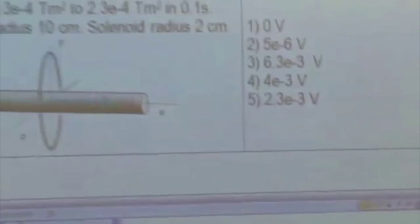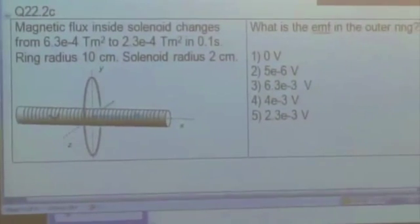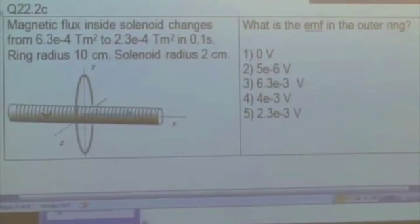We're going to change the current so that the magnetic field in the interior changes from 6.3 times 10 to the minus 4 tesla meters squared to 2.3 times 10 to the minus 4 tesla meters squared in a time of 0.1 seconds.